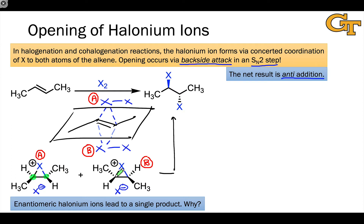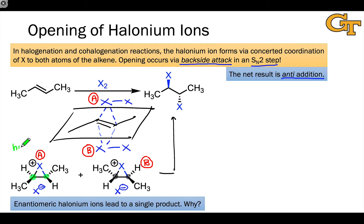Notice that this molecule has a rotational axis of symmetry that is in the plane of the screen and runs through the X-atom and bisects the carbon-carbon bond in the halonium ion. That's a 180-degree axis of symmetry that leaves the appearance of the molecule completely unchanged and exchanges the two carbons in green. This means that those carbons are homotopic.